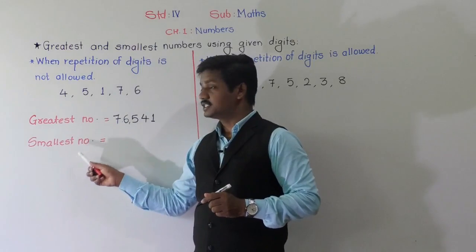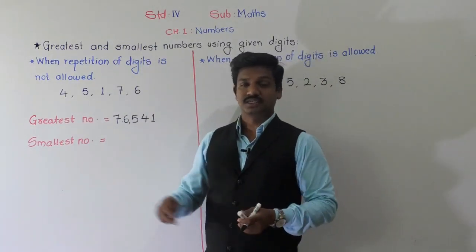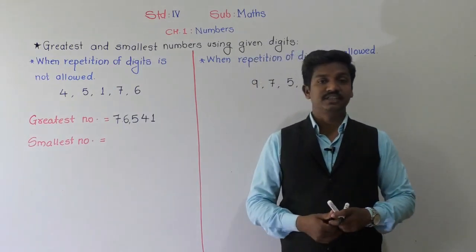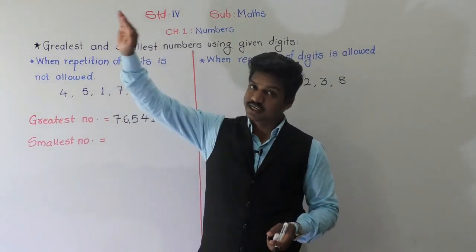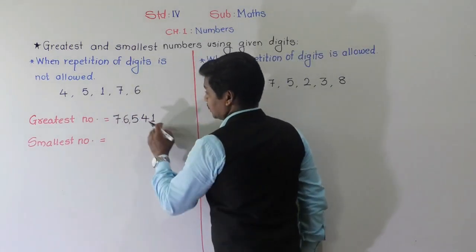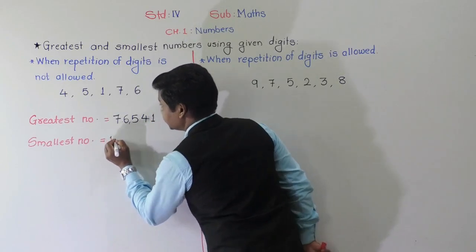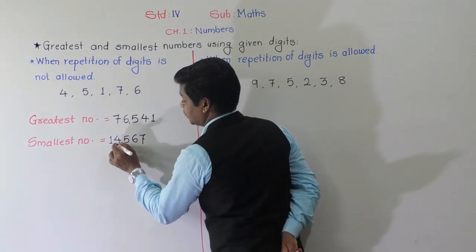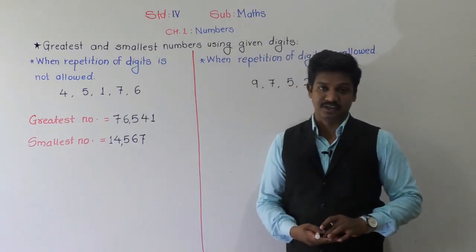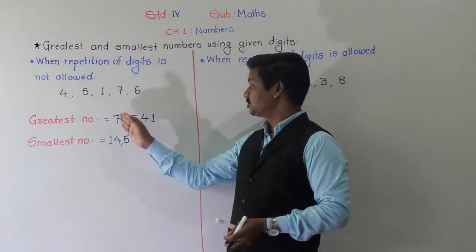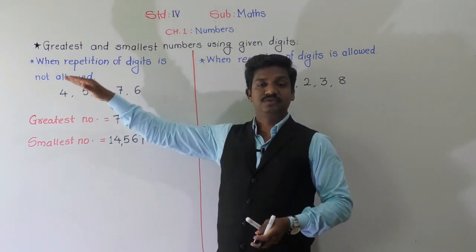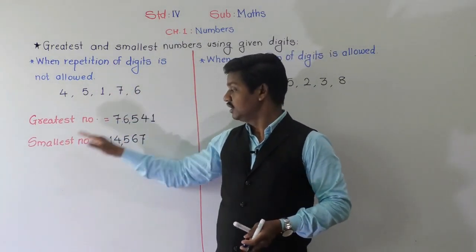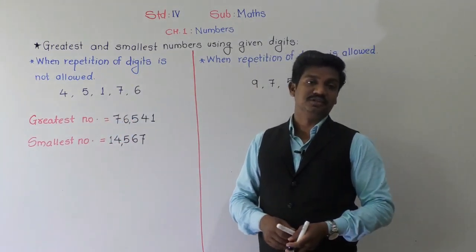To form the smallest number, we do the opposite — arrange the given digits in ascending order, smallest to biggest. So 1 comes first as it is the smallest digit, then 4, 5, 6 and 7. That gives us 14,567. This is the smallest possible five-digit number. So: for the greatest number, arrange in descending order; for the smallest number, arrange in ascending order. That's it!